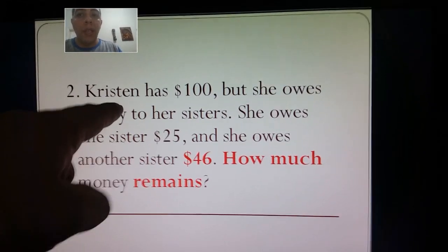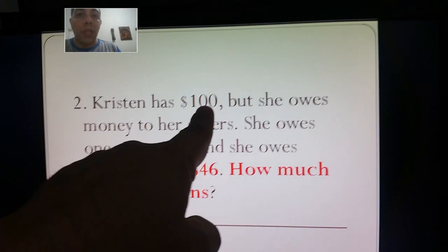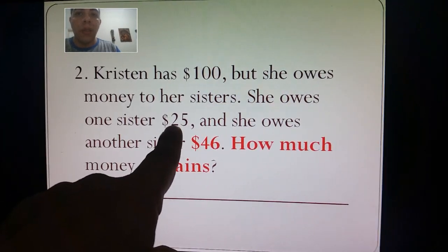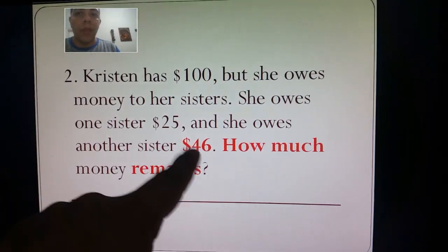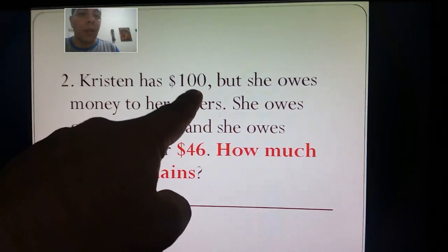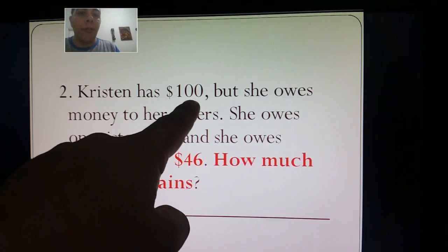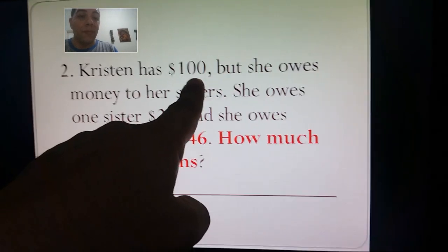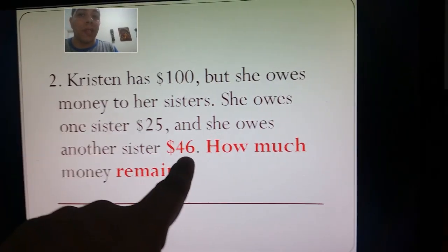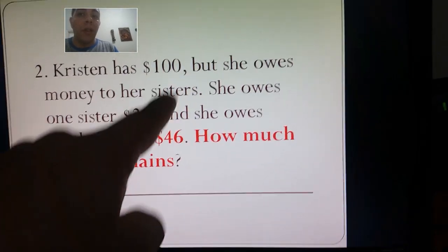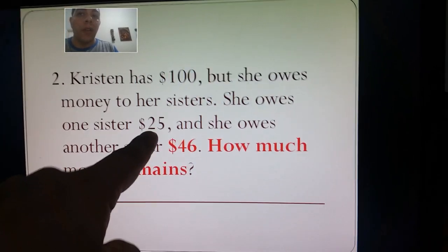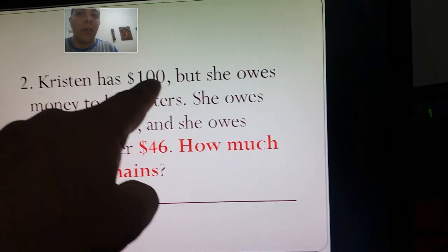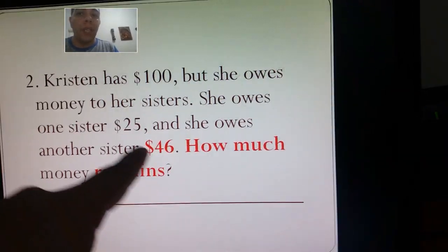Kristen has $100, but she needs to give money to her sisters — $25 to one and $46 to the other. So this money has to be taken from the $100. The obvious operation here has to be subtraction. So it's going to be $100 minus $46 minus $25, or $100 minus $25 minus $46.